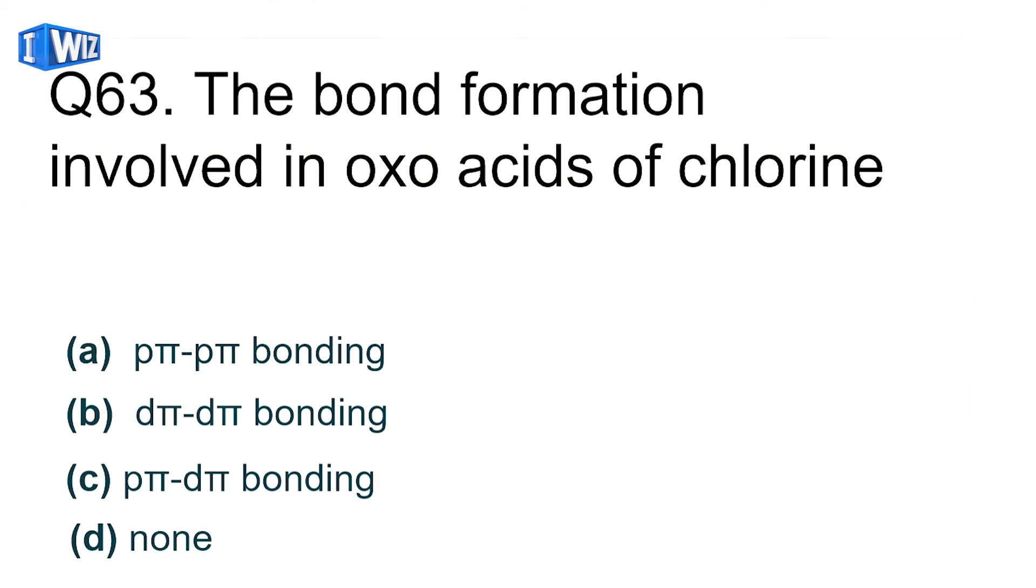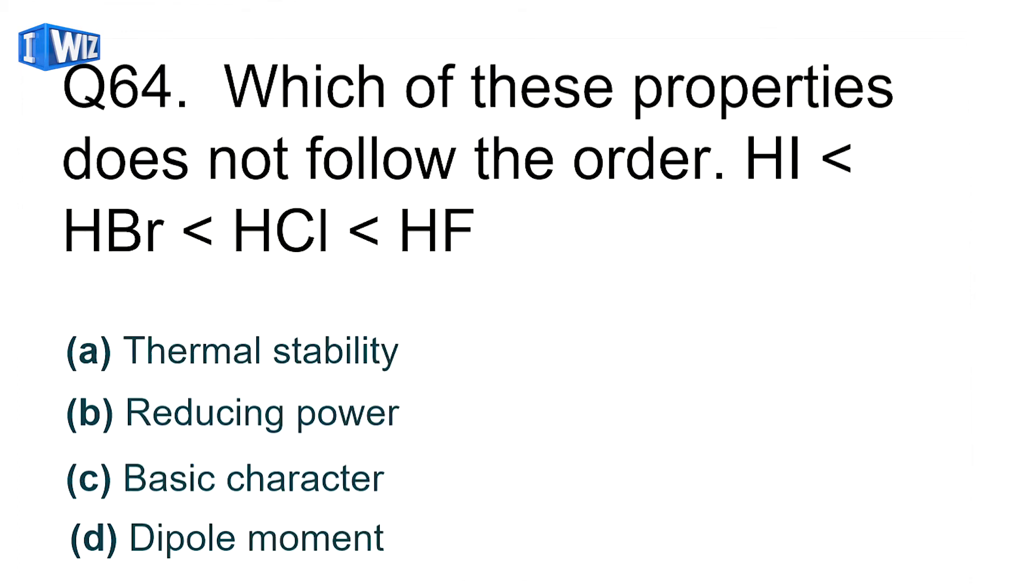The bond formation involved in oxo acids of chlorine are what type? In chlorine oxo acids, chlorine forms pi bonds with oxygen. These pi bonds are p-pi d-pi bonds, where oxygen p orbitals and chlorine d orbitals are involved.